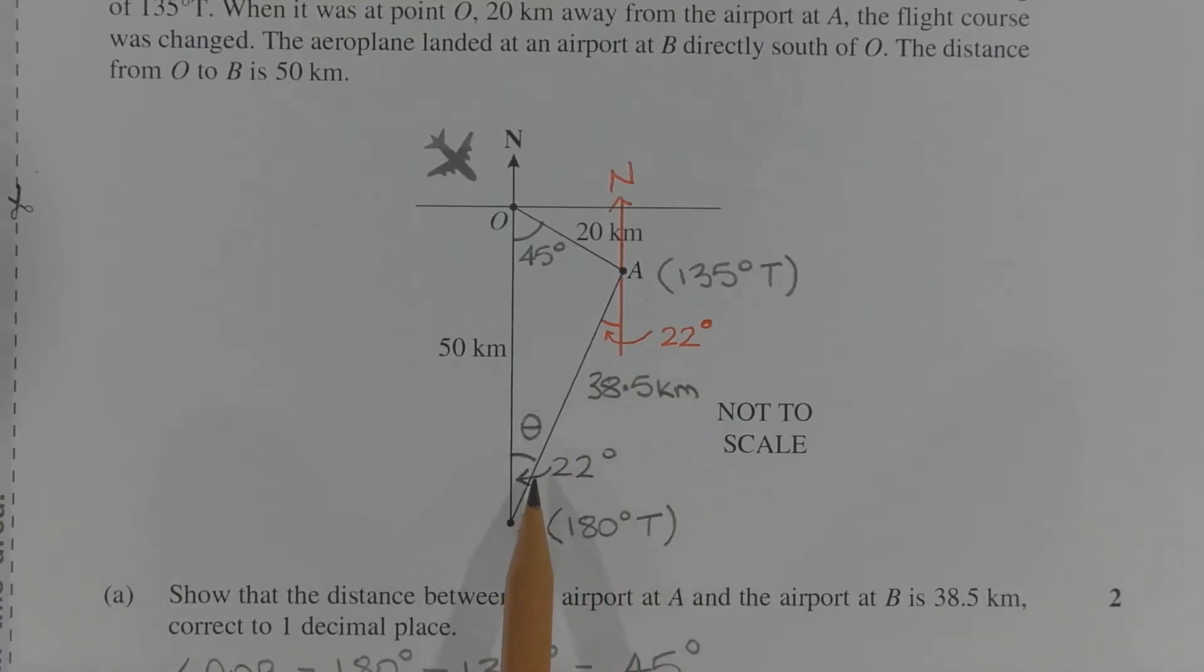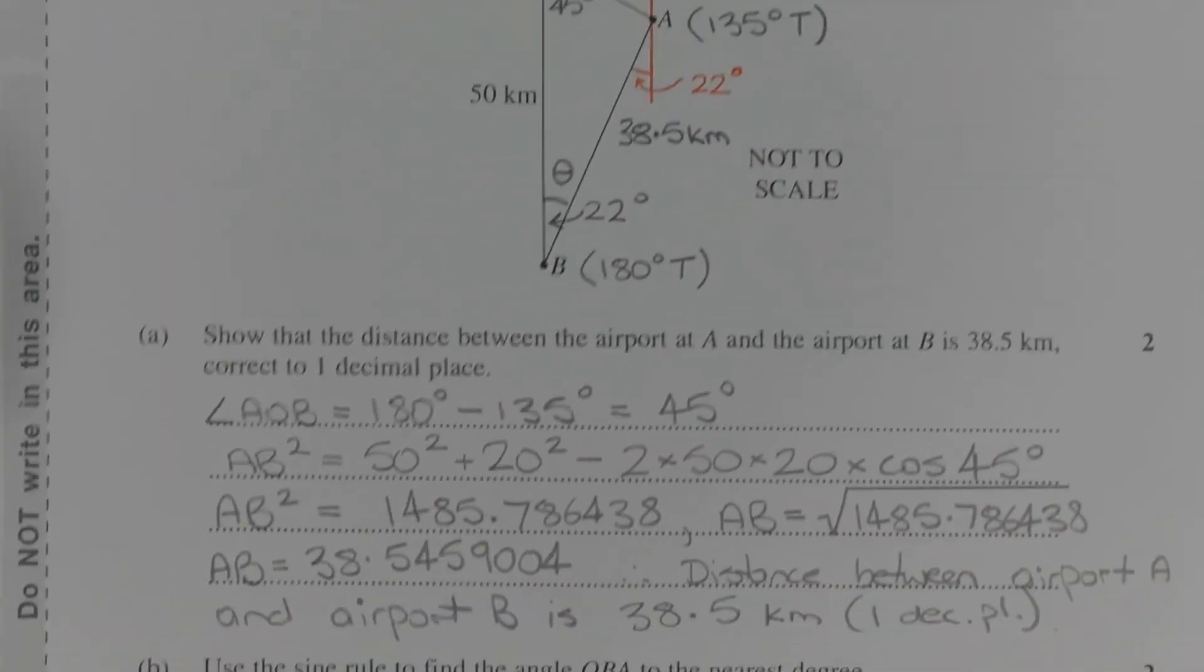Now we worked out in part B that this angle here, angle OBA, is 22 degrees, which means this angle here is also 22 degrees. So to find the bearing of the airport at B from the airport at A, starting from north and going clockwise, it will be 180 degrees plus 22 degrees, which will be 202 degrees.